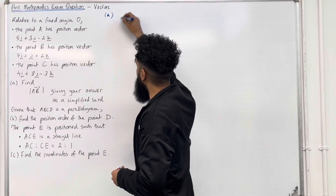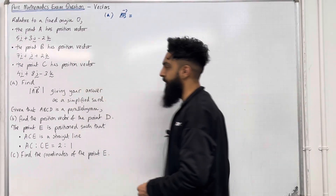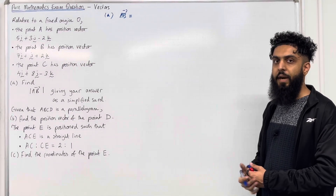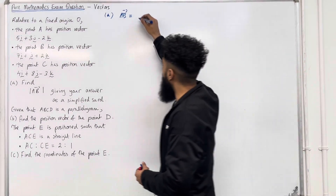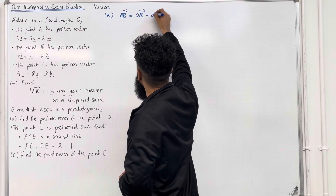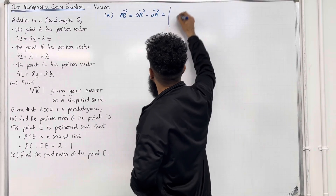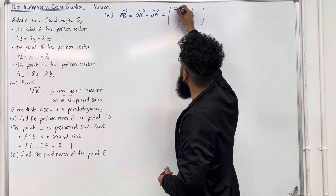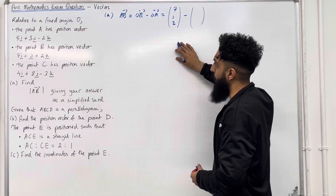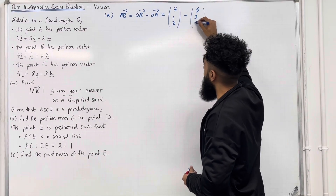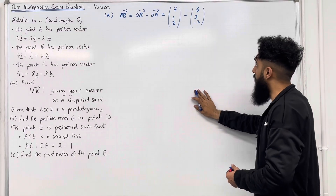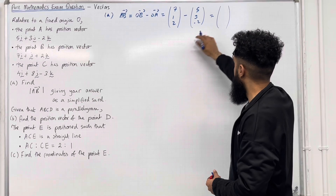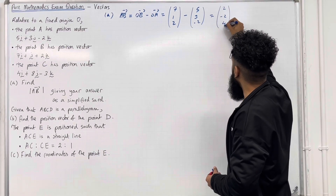Let's have a look at the solution to part A. I'm going to start by finding the vector A to B. Because we're dealing with position vectors, the vector A to B is given by OB minus OA. As column vectors, OB is (7, 1, 2) and OA is (5, 3, −2). Subtracting these two vectors gives (2, −2, 4).